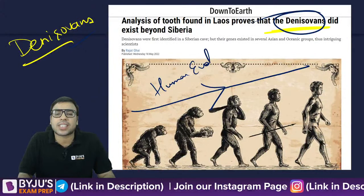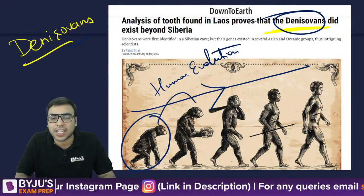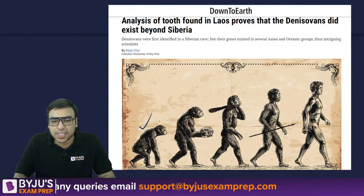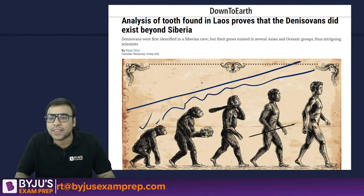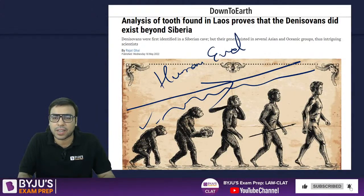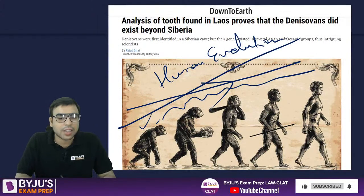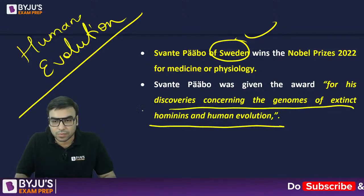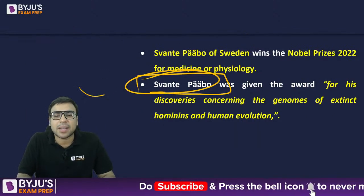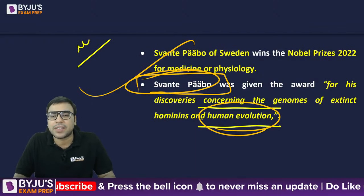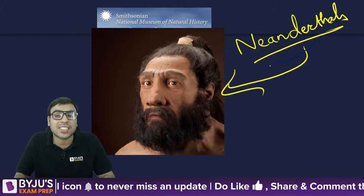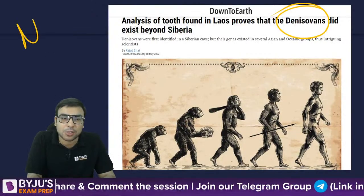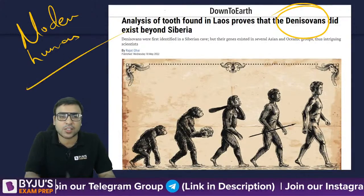According to science, earlier humans were very similar to monkeys and gradually evolved to modern humans — this entire process is called human evolution. Pääbo researched this and matched the DNA of Neanderthals and Denisovans with modern humans, which was a very tough task.